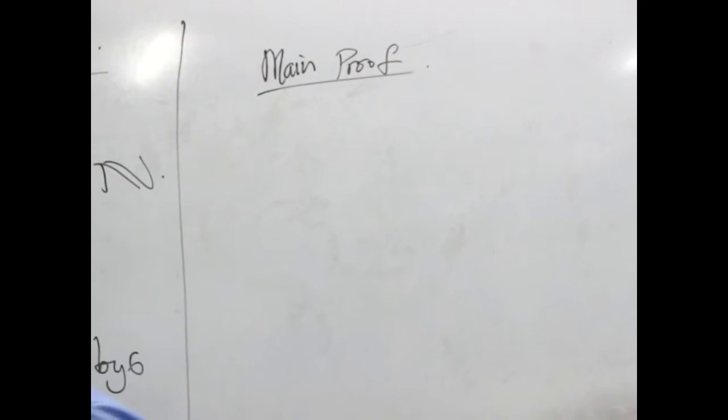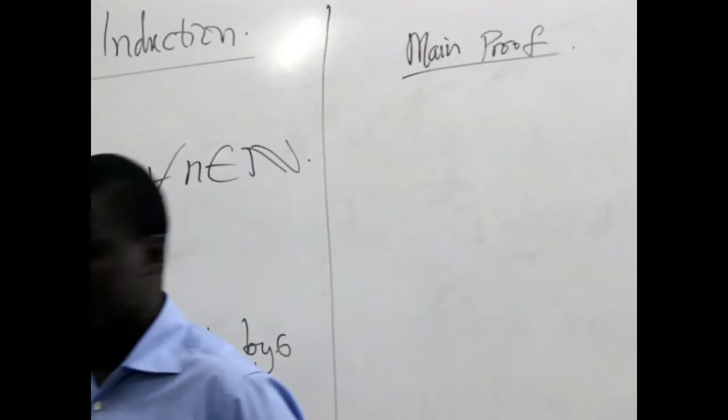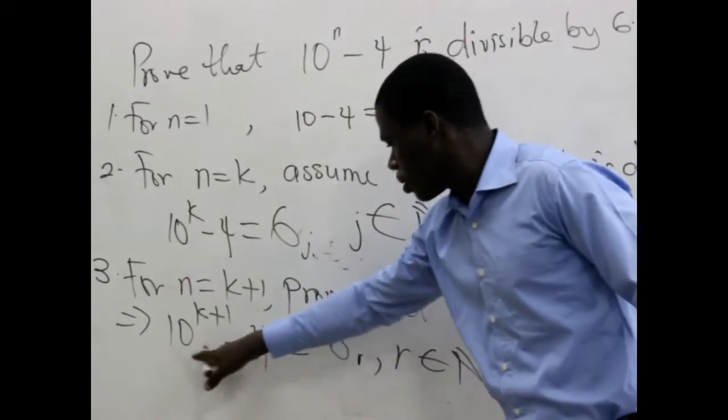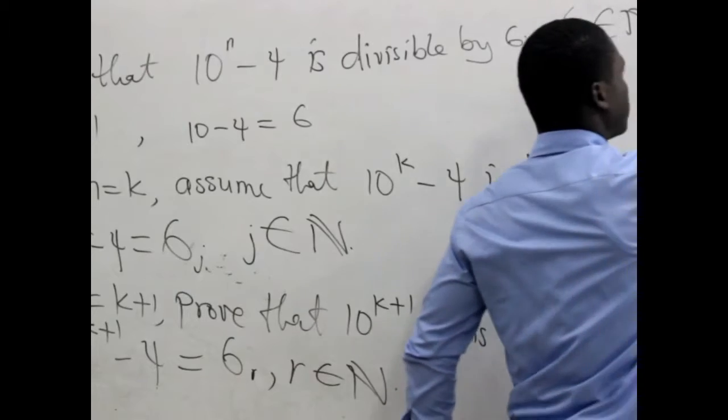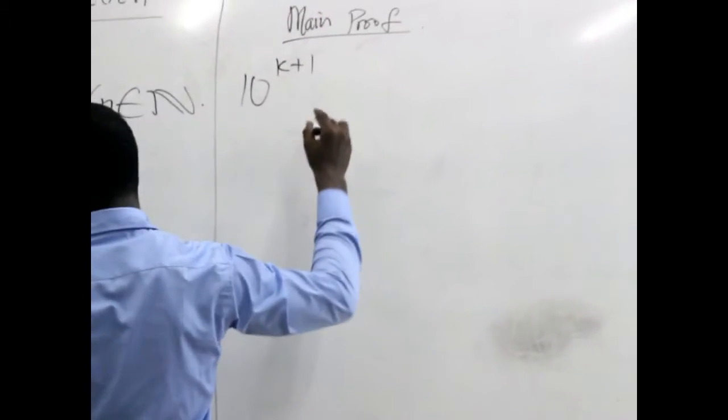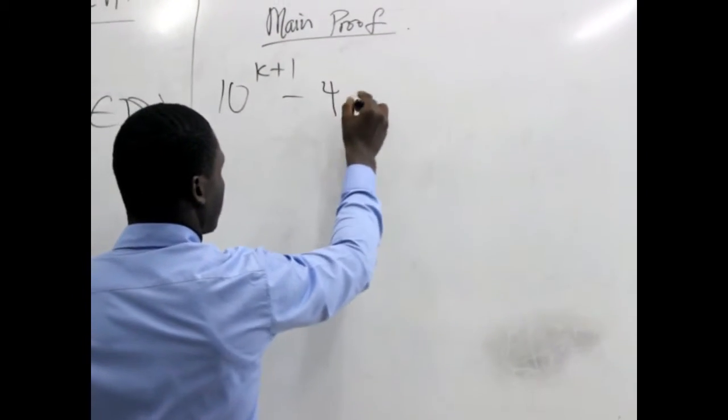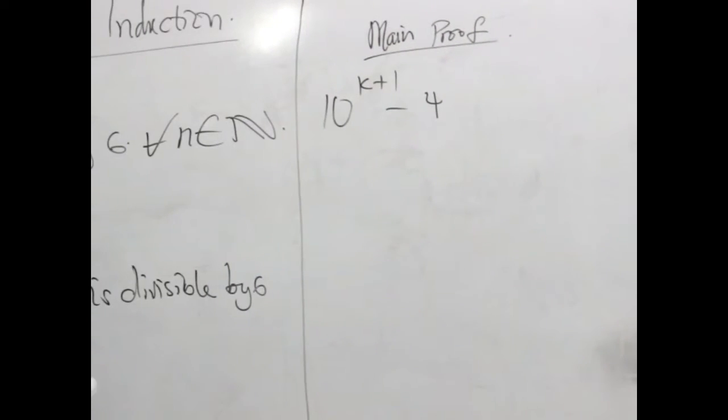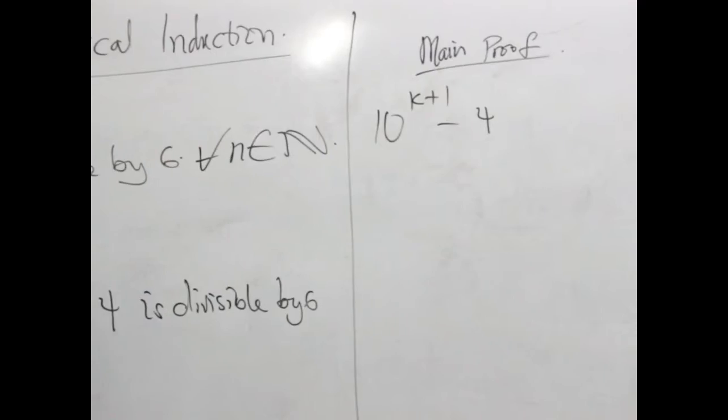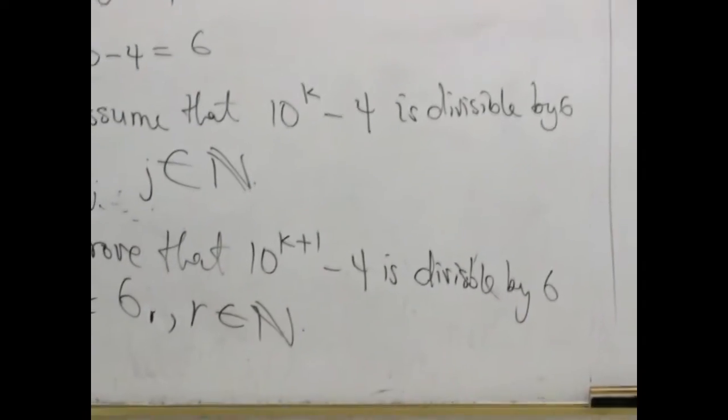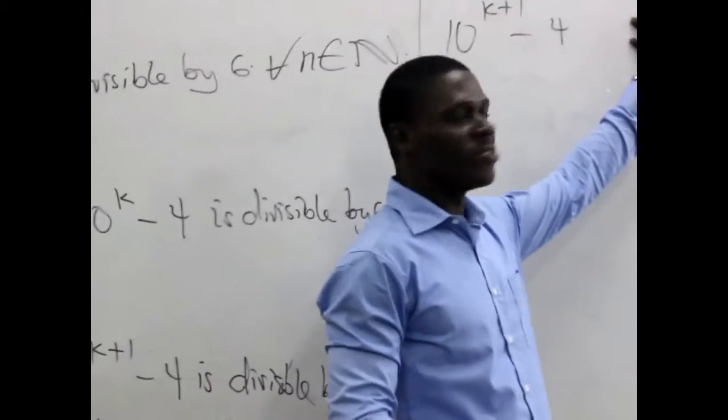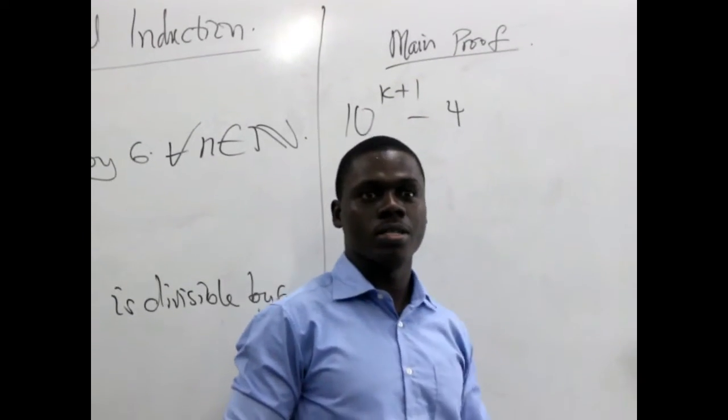So the main task is to show that this one is equal to 6r. That's what we are trying to do, that 10^(k+1) minus 4 is equal to 6r. We work from the left and see whatever we get will be 6r.